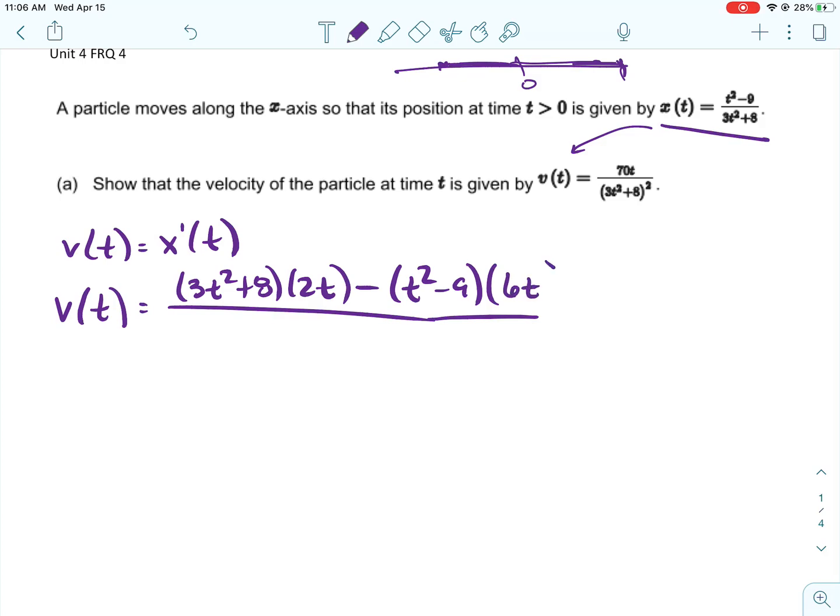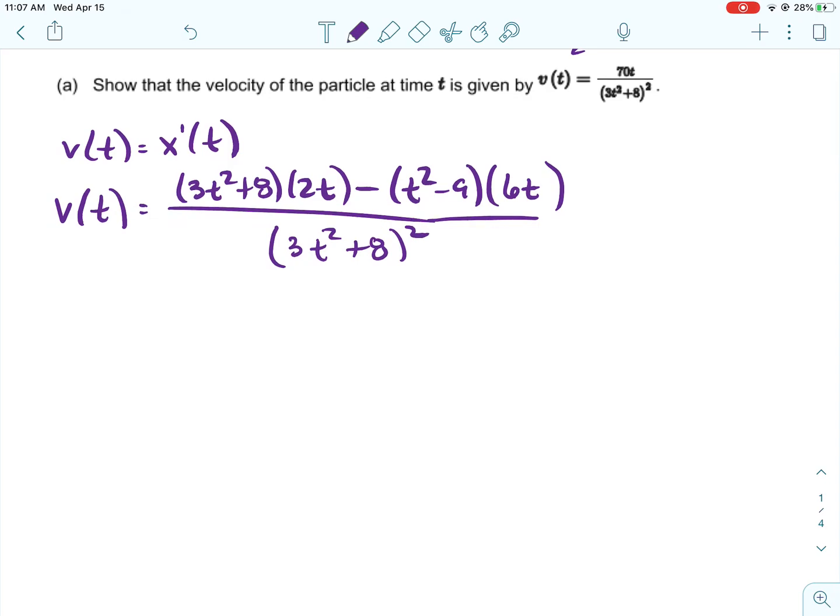So let's find the derivative of x. So we're going to do the quotient rule. We'll do low d high minus high d low over low squared.